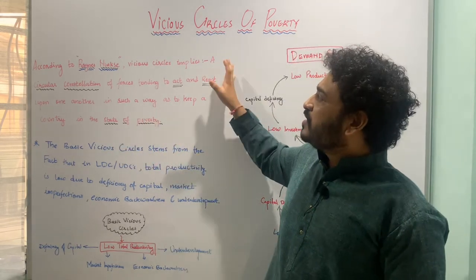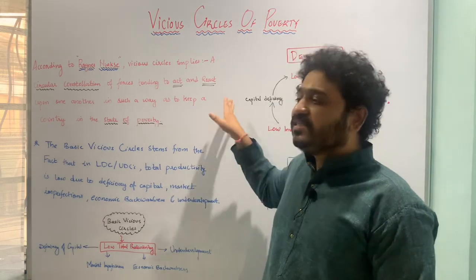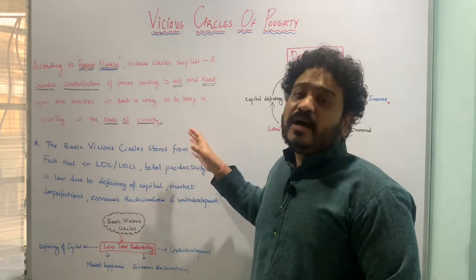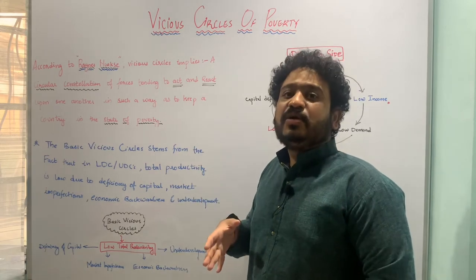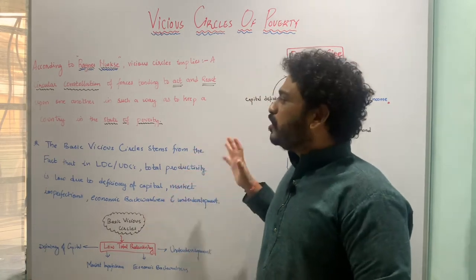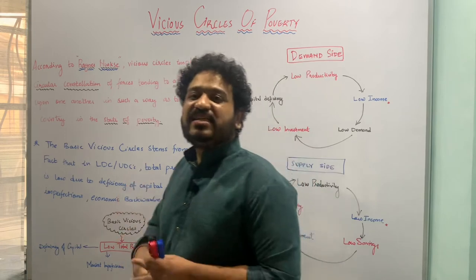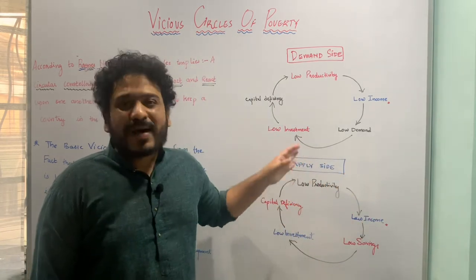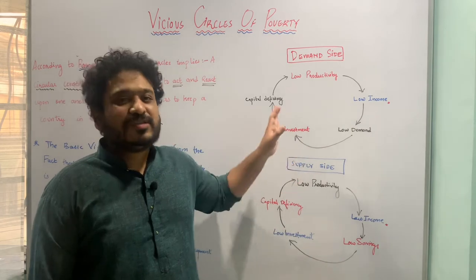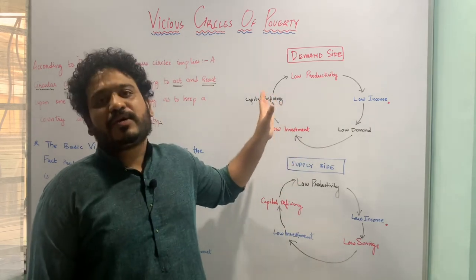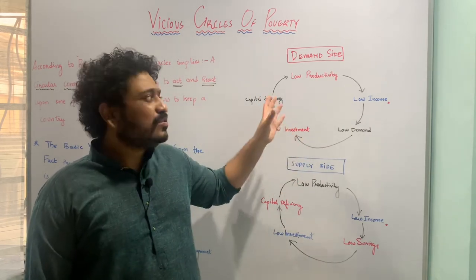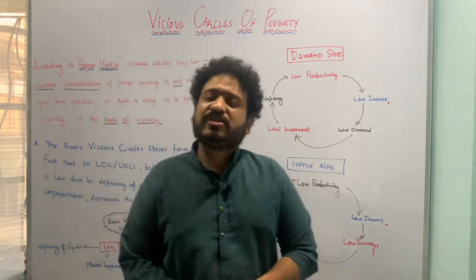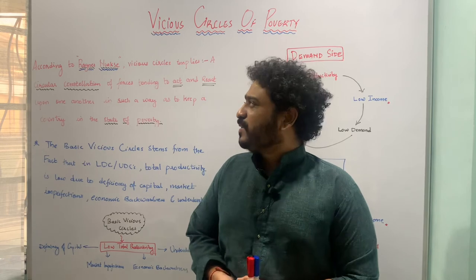This is the concept of vicious circles of poverty, which is a problem and a hindrance to economic development. To move forward, these vicious circles must be broken so the economy can return to the path of development. These circles are therefore obstacles to the process of economic development, as analyzed from the perspective of Ragnar Nurkse.